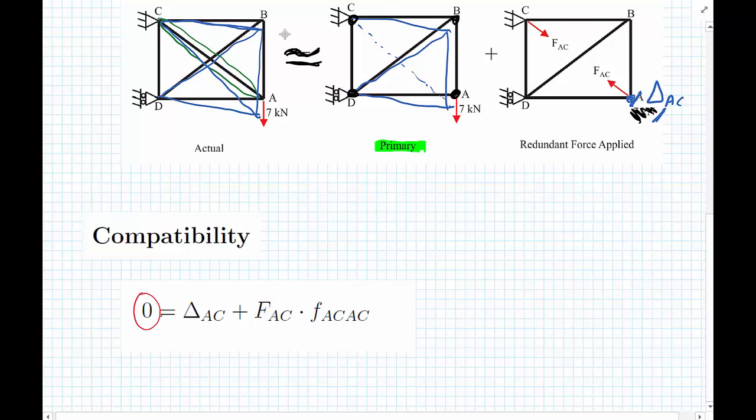We have the Delta_AC that occurs in the primary structure, and now we have a force F_AC that happens in the redundant structure, and then we have one unknown.